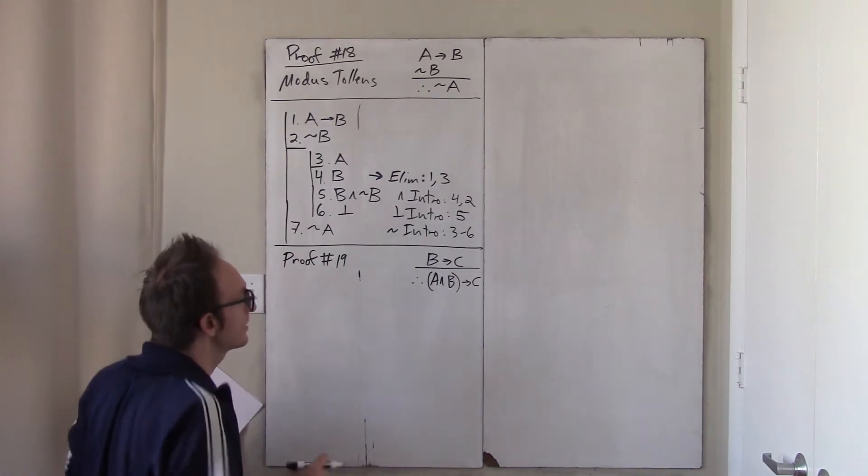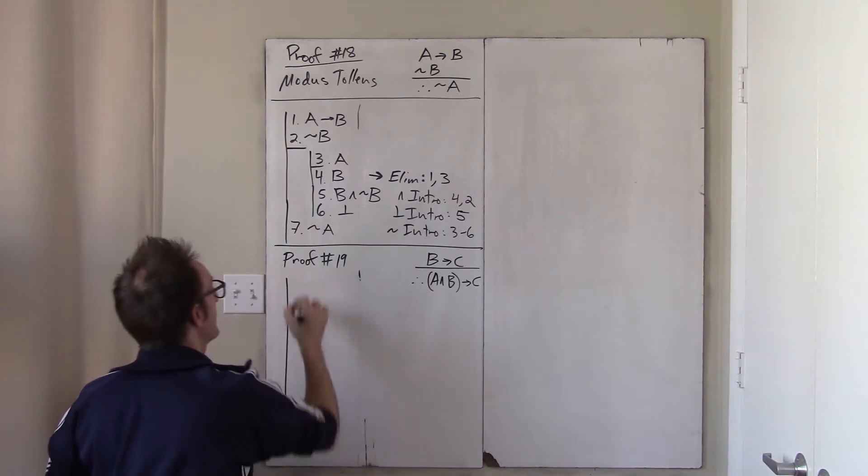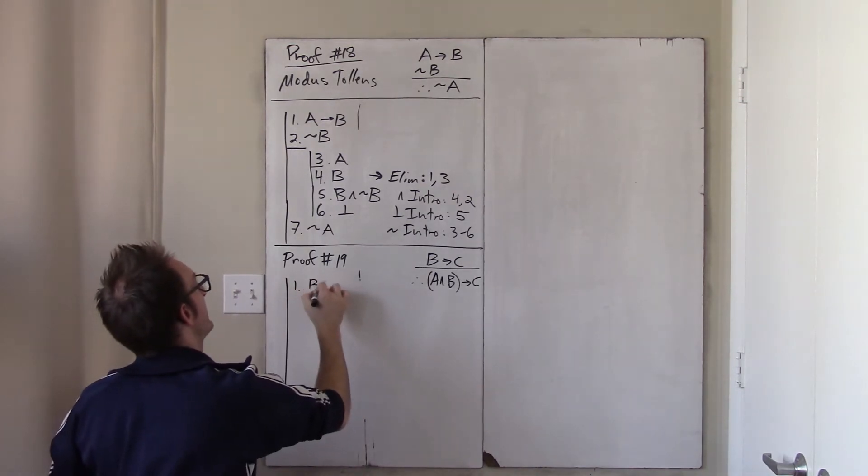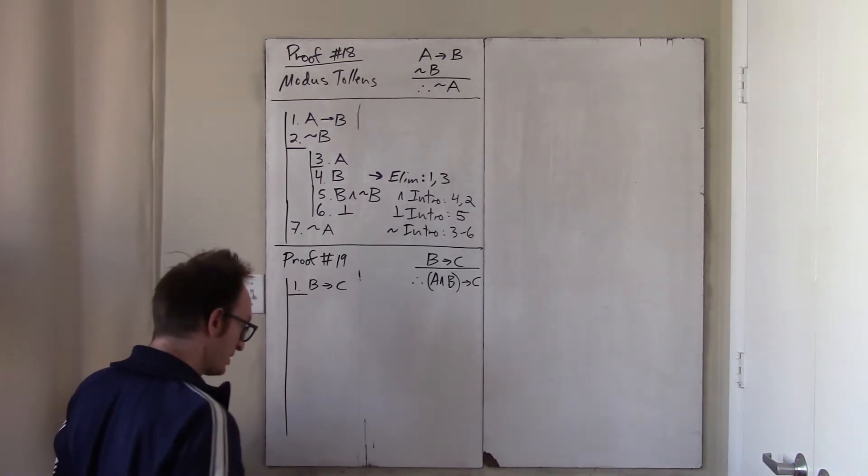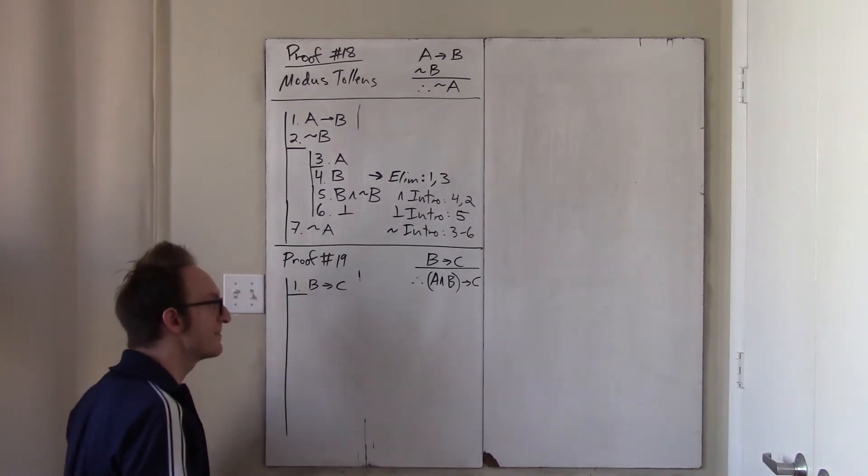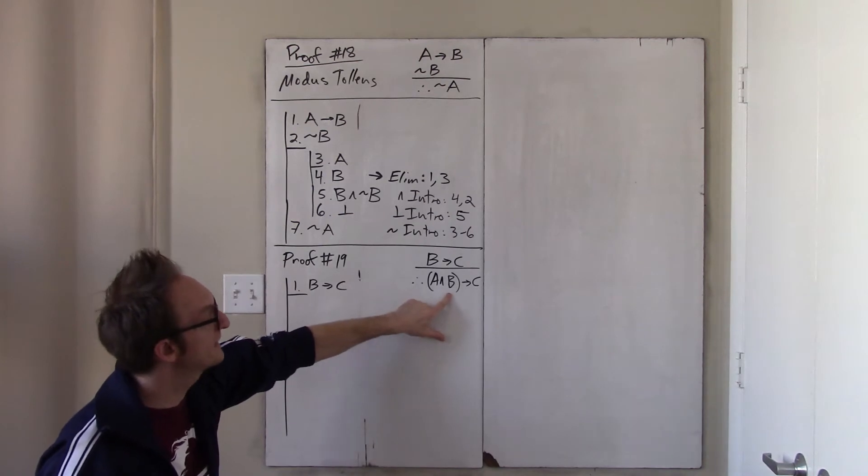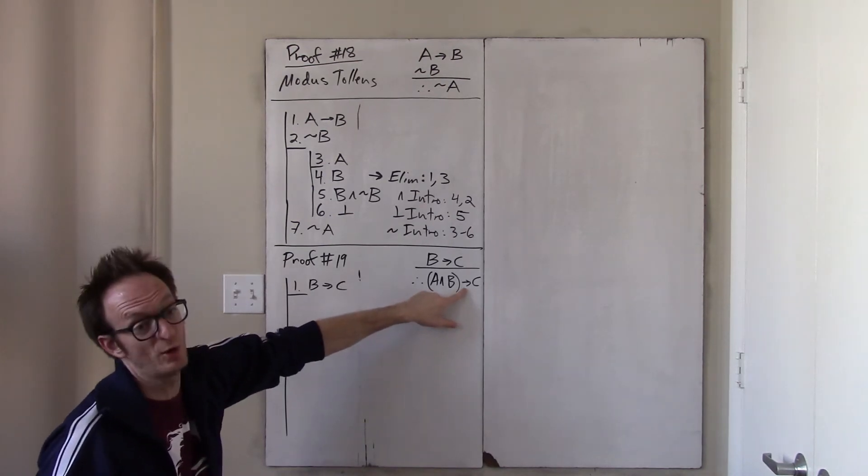But how can we prove this? How can we prove that this argument is valid? Well, let's go. There's one premise, if B then C. And I need to prove this conditional. Okay, and so now, sort of for the first time, we are faced with this idea of how does one prove that a conditional holds?